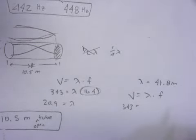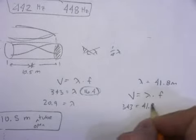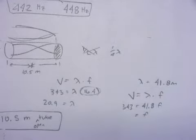So, the wavelength, 41.8, F, so you take 343, divided by 41.8, and you get 8.2.